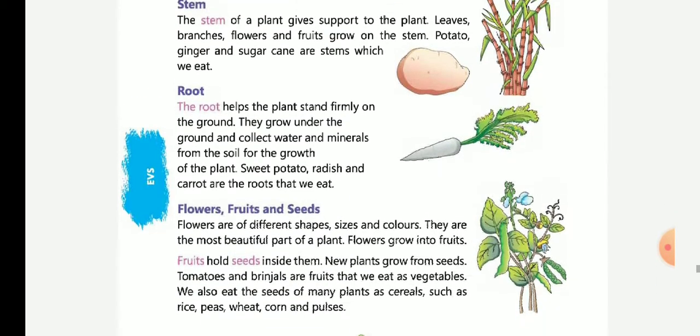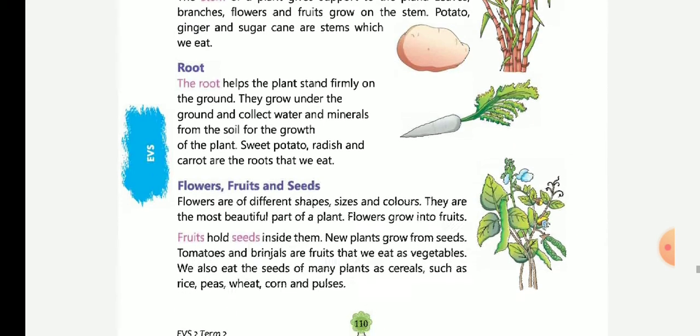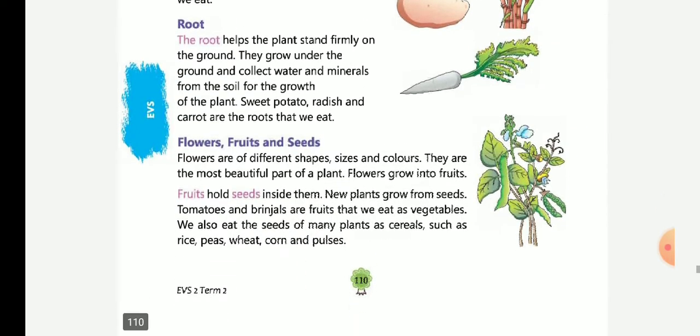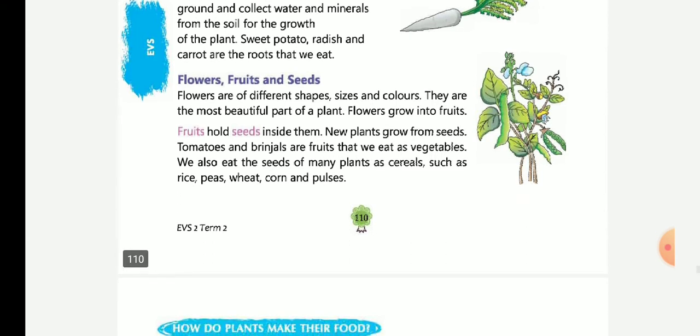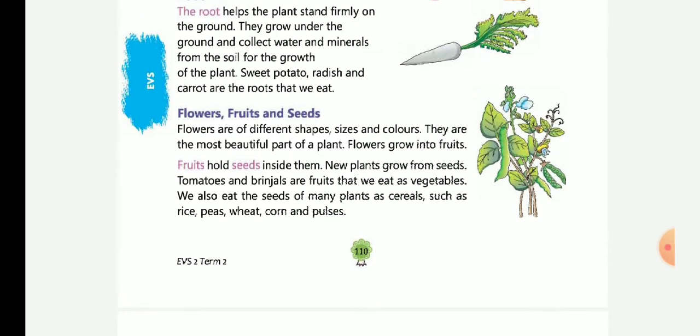The root helps the plant stand firmly on the ground. They grow under the ground and collect water and minerals from the soil for the growth of the plant. Sweet potato, radish and carrot are the roots that we eat. Flowers, fruits and seeds.